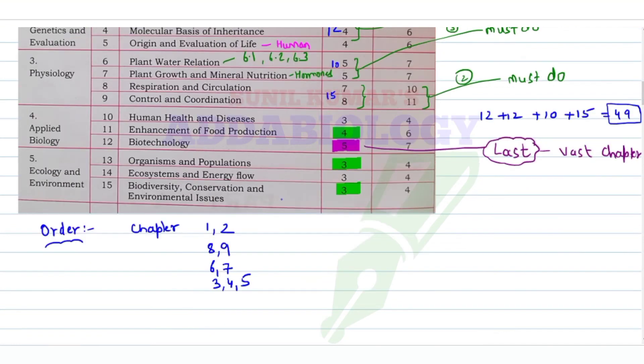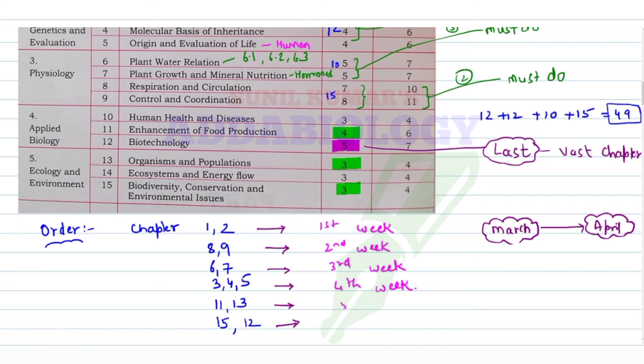This is the order. First two chapters you can do in the first week if you start from today after watching the video. Your exam will be in April, so you have one month or 4 to 5 weeks. Do chapters 1 and 2 in the first week, 8 and 9 in the second week, and so on. In six weeks, you can complete your entire biology syllabus because in seven days you can easily study two chapters.